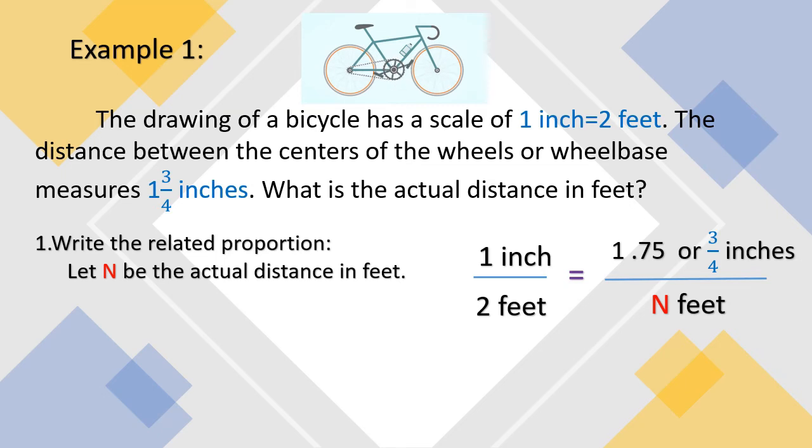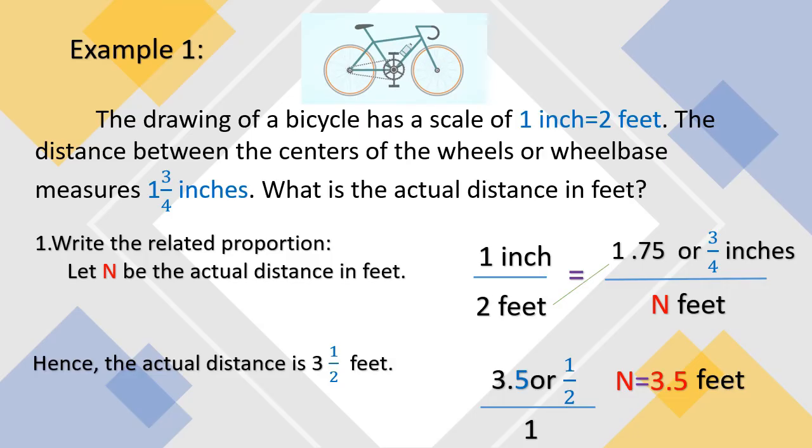Then we apply cross multiplication. 1.75 times 2, that is equal to 3.5. Then we will divide this 3.5 by 1, the answer is still 3.5. N is 3.5 feet. Hence, the actual distance is 3 and 1 half feet.